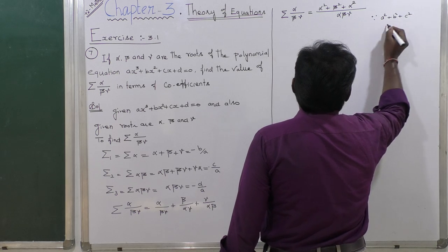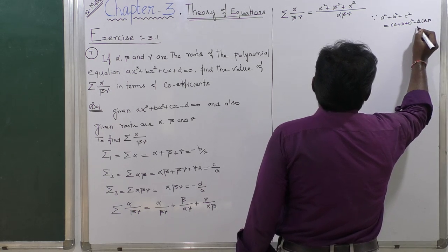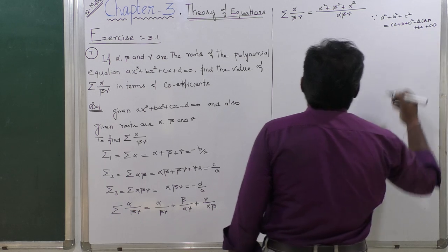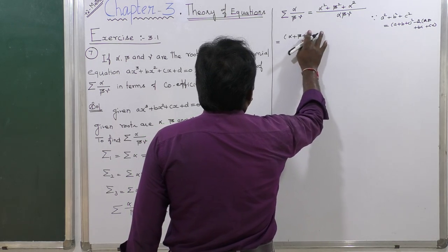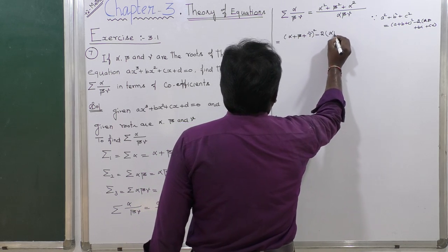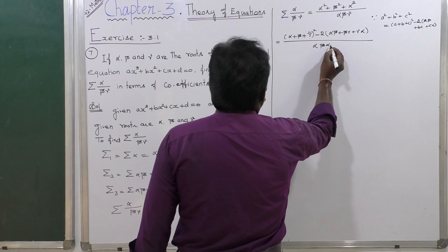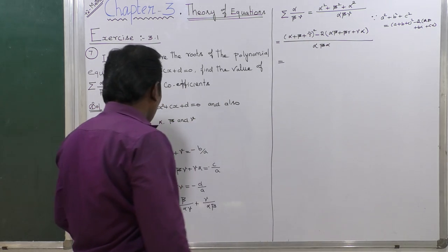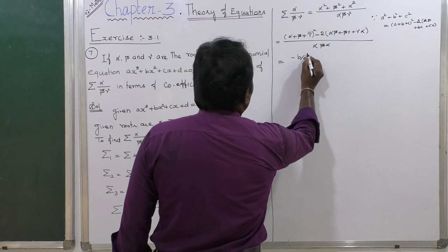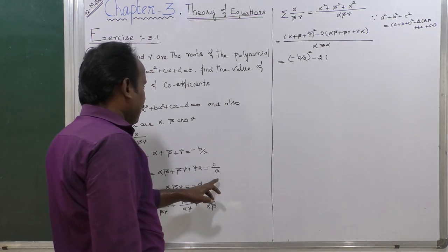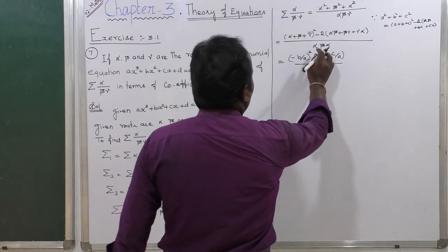The numerator becomes alpha² + beta² + gamma². Using the algebraic formula: a² + b² + c² = (a + b + c)² − 2(ab + bc + ca), the numerator is (alpha + beta + gamma)² − 2(alpha·beta + beta·gamma + gamma·alpha), all divided by alpha·beta·gamma.